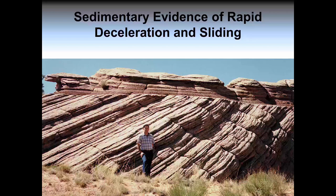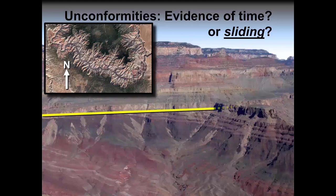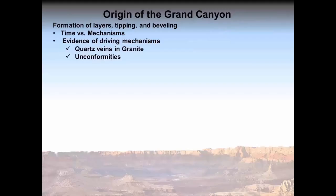How else was the sandstone beveled so evenly? This again points to a rapid one-time sliding event, where tipped layers sheared along a horizontal plane and were beveled by sediments above. The Grand Canyon's great unconformity and other unconformities, such as the one visible looking north from the canyon's Desert View Watchtower, reveal the large-scale extent of beveling. Layers below appear to have been cleanly sheared off with flat layers then stacked above.